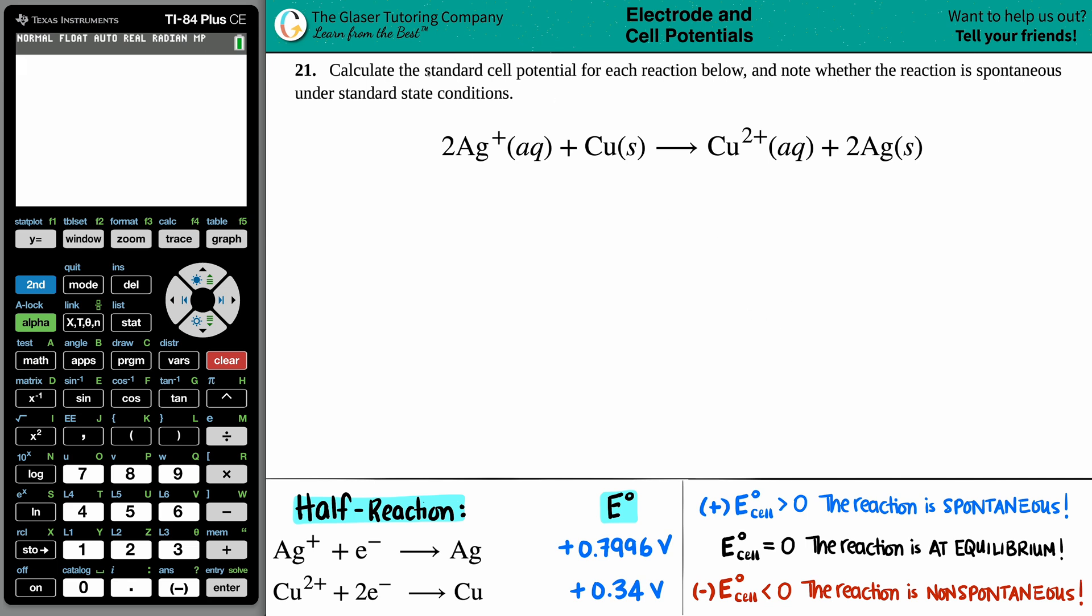Number 21. Calculate the standard cell potential for each of the reactions below and note whether the reaction is spontaneous under standard state conditions.